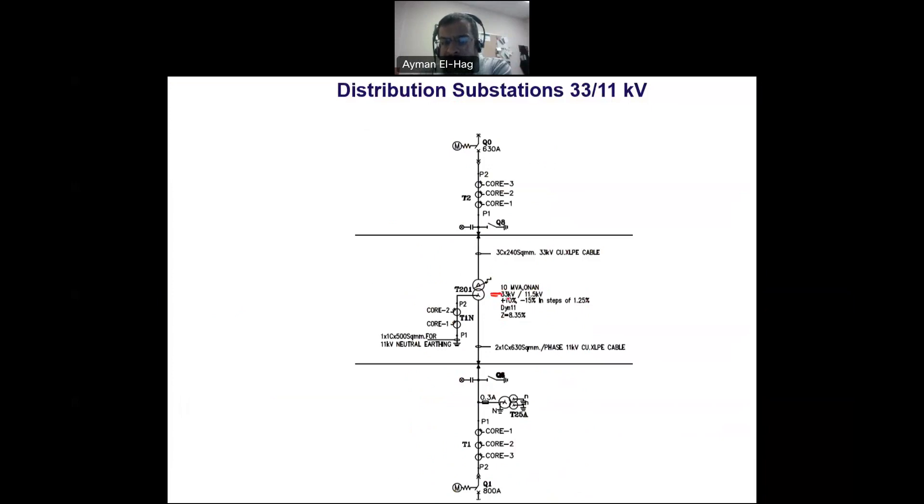Then we have the voltage level, 33 kilovolt by 11.5 kV. This is when the transformer is at no load. Then we have plus 10% to minus 15% in steps of 1.25%. To control the voltage at the secondary side of the transformer, we need this because the load is varying. As the load goes up and down, the voltage will go up and down.